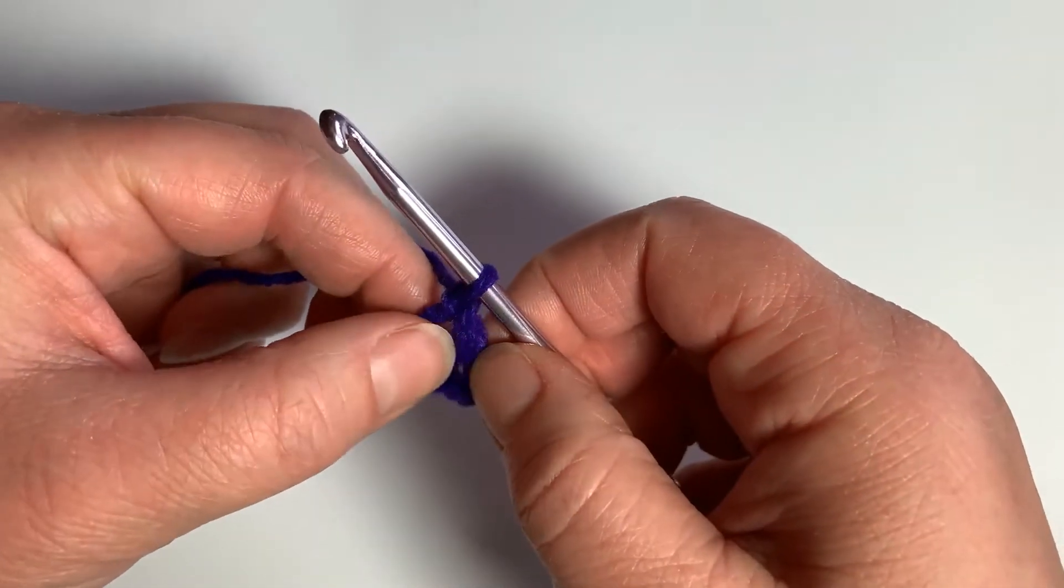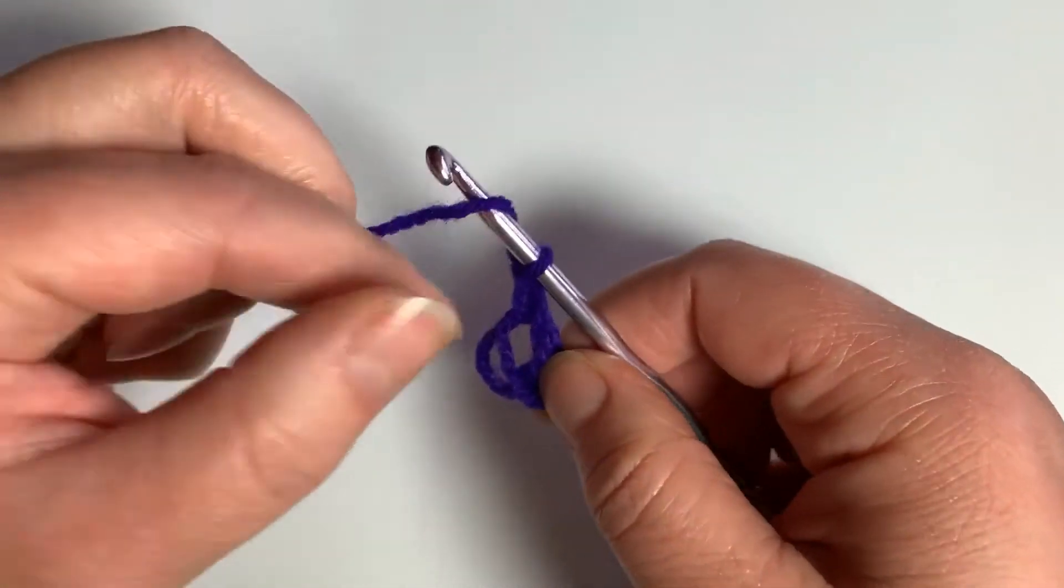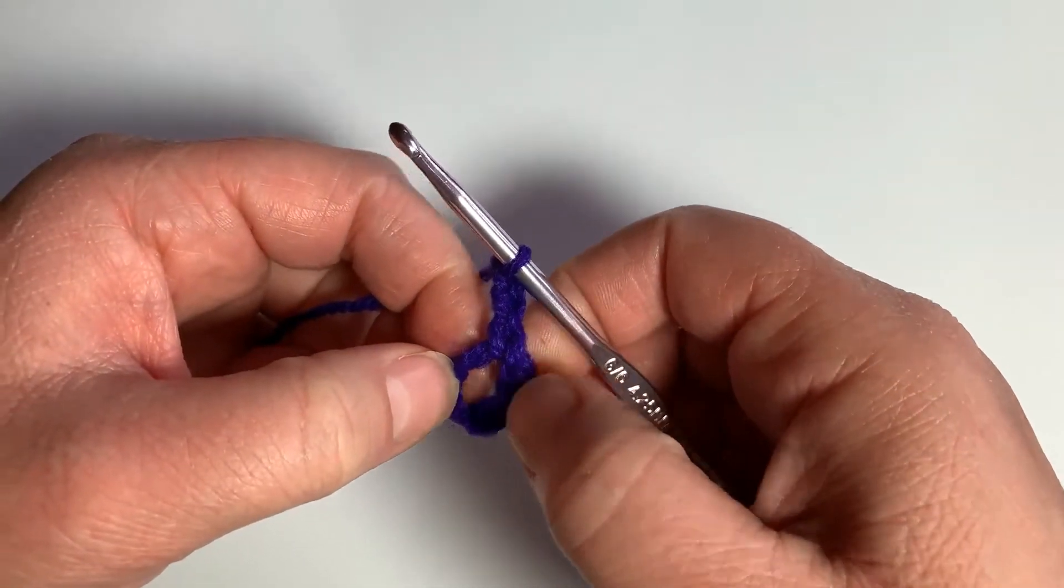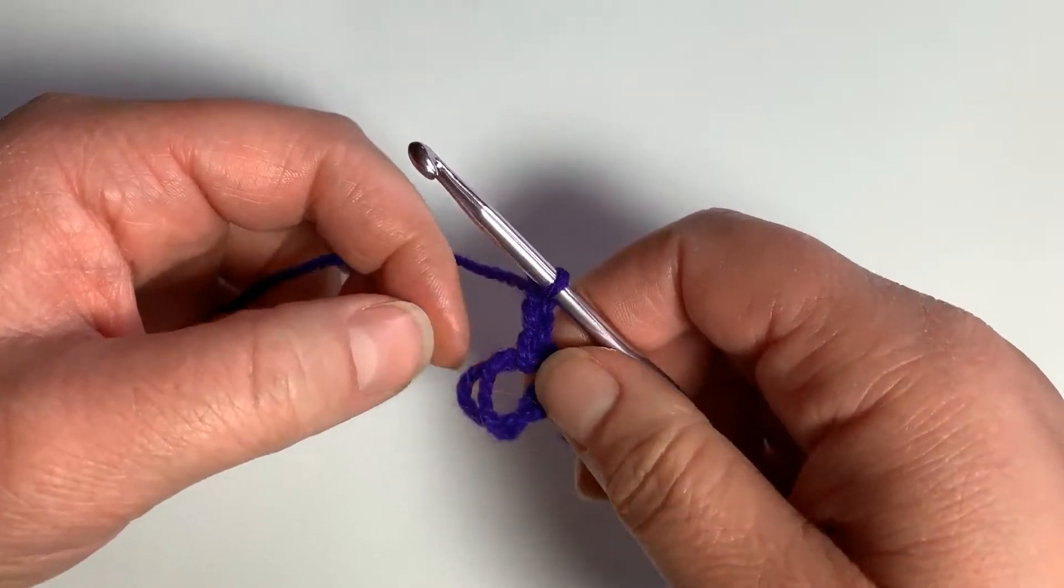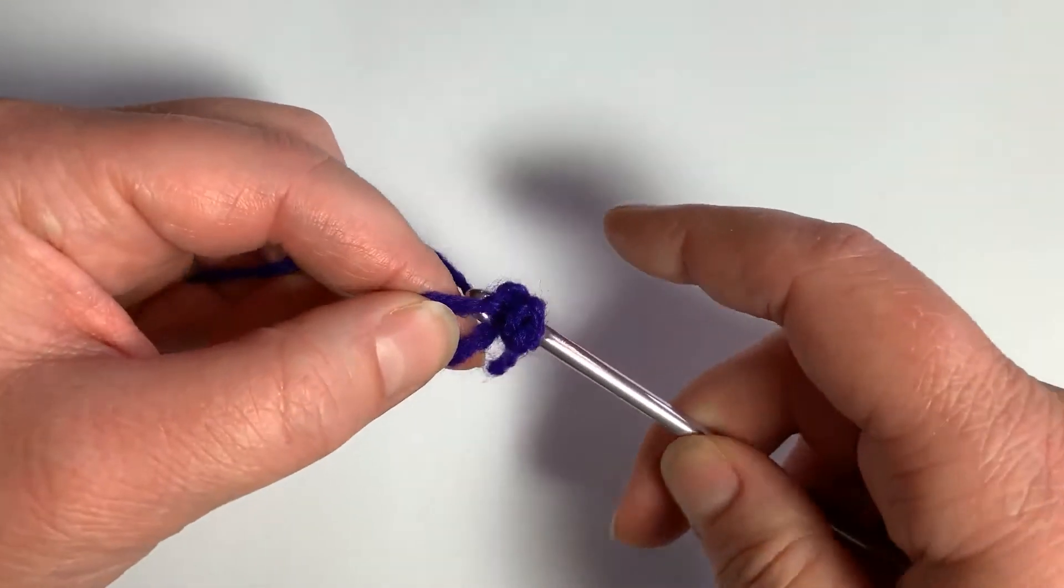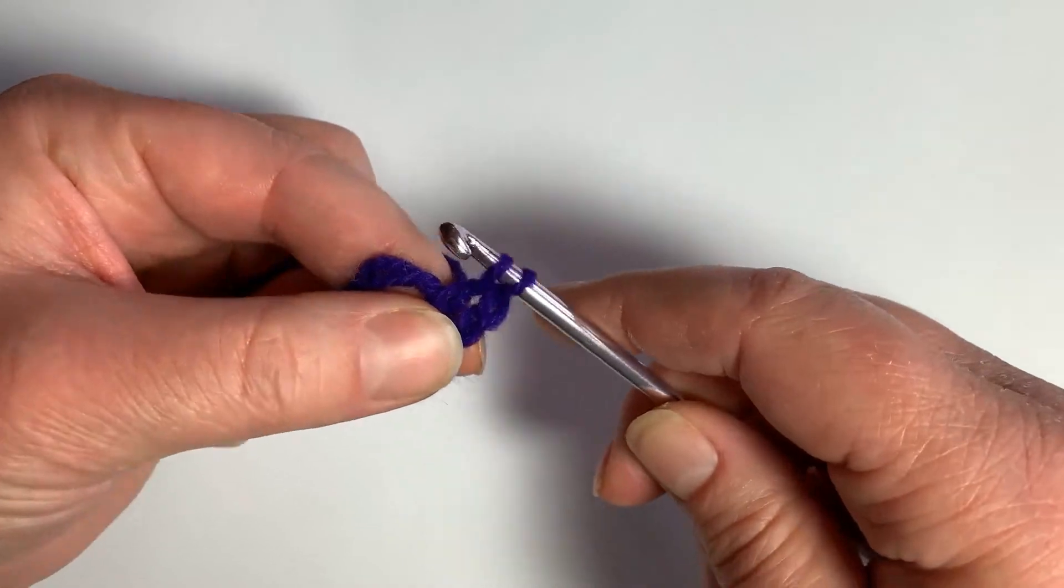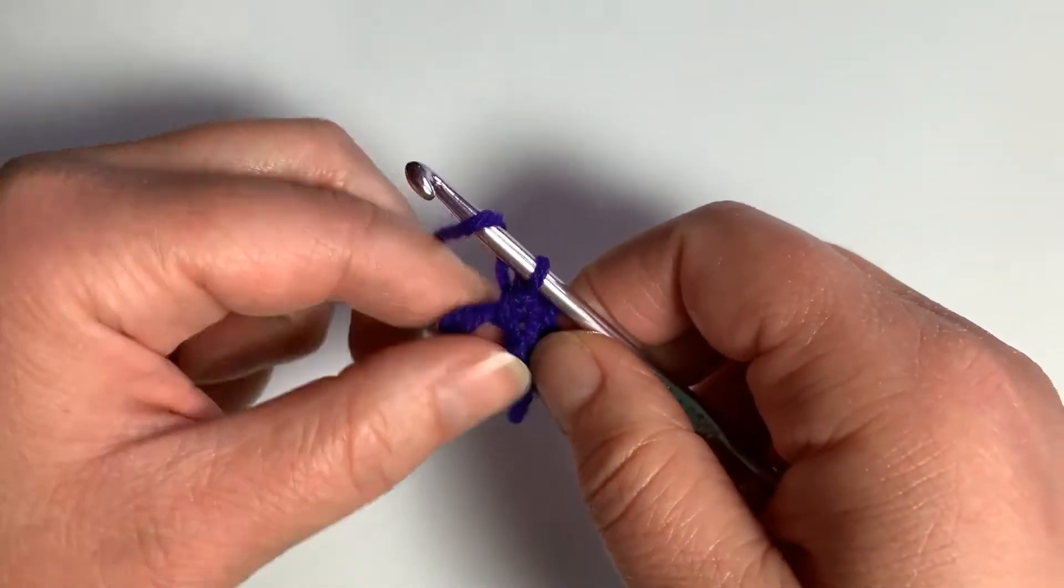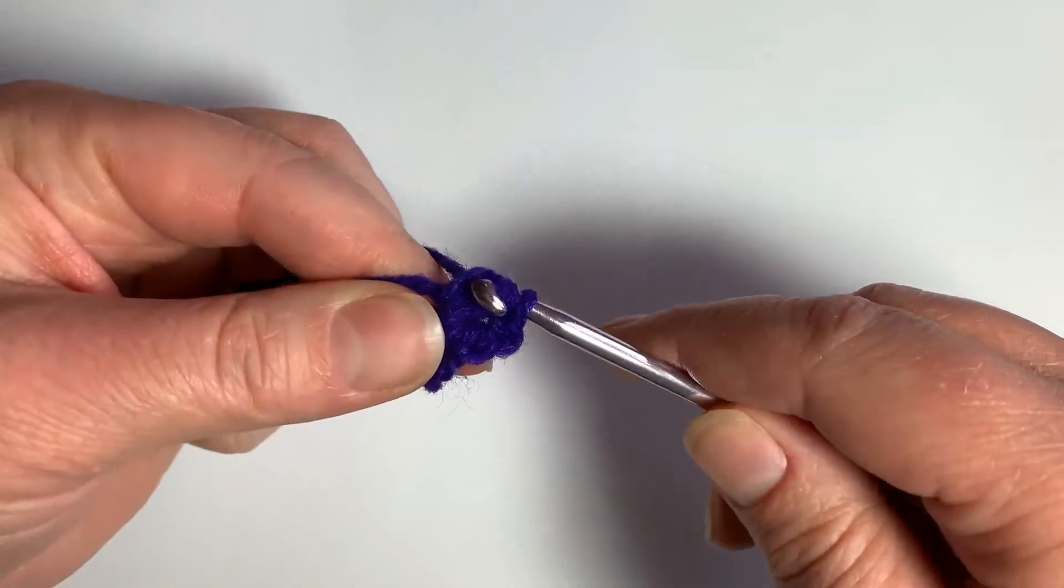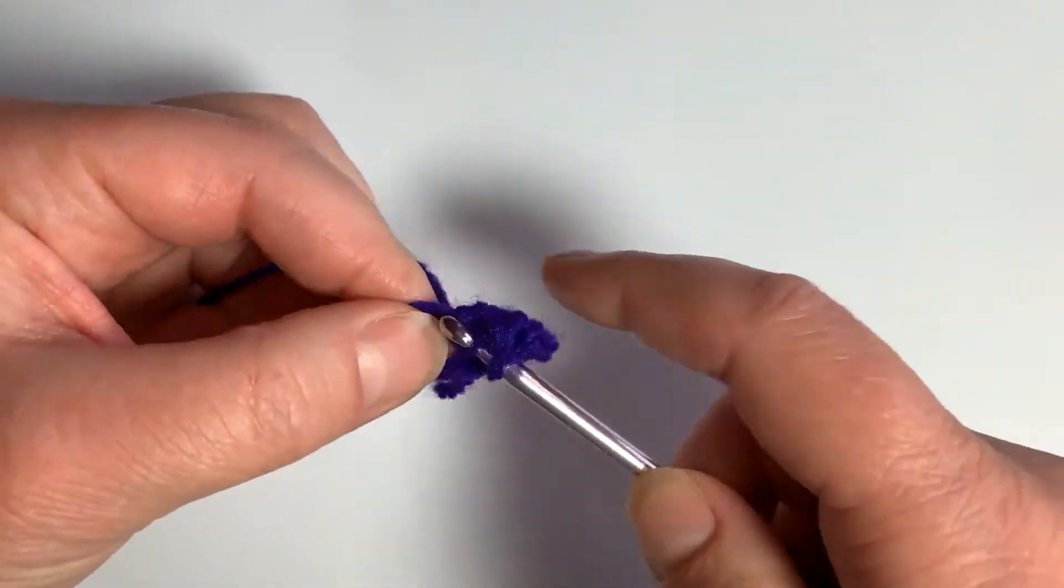So in this first part of the example, we are going to chain two to count as our first half double crochet. That's the first half double crochet. Ideally, I would like to use an invisible starting half double crochet here, but this is the simplest method. And then you would half double crochet the remaining stitches, however many your pattern calls for. In this pattern, it calls for eight total. So I'm just going to half double crochet eight in this magic circle.